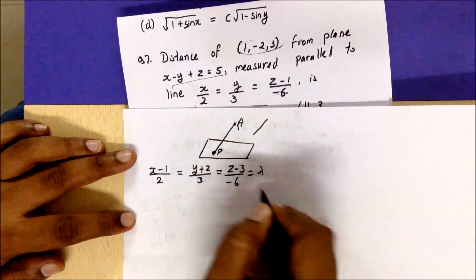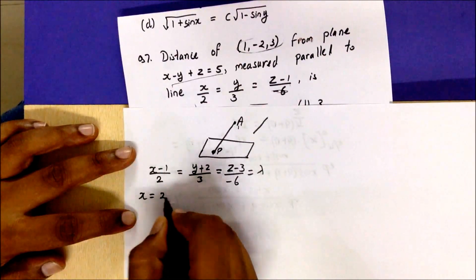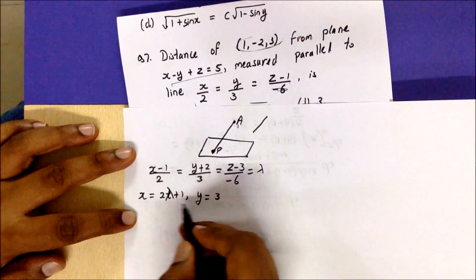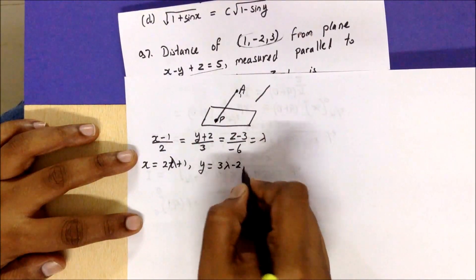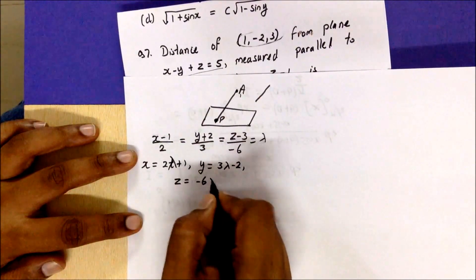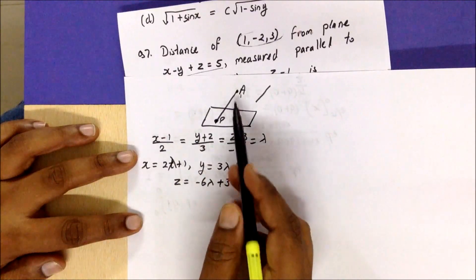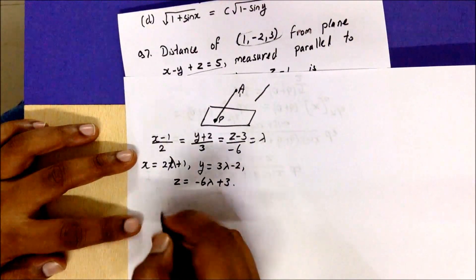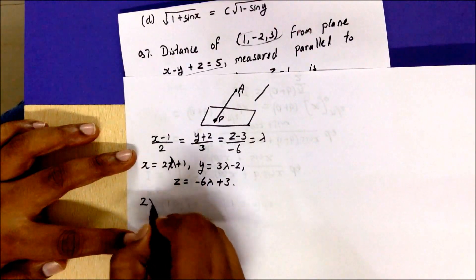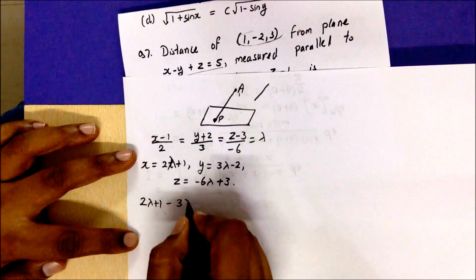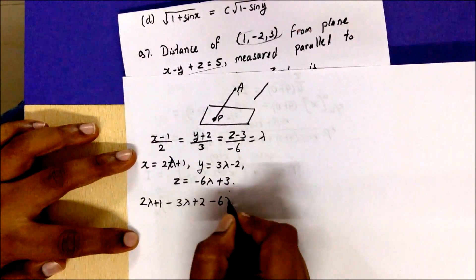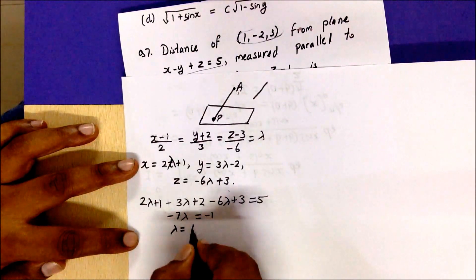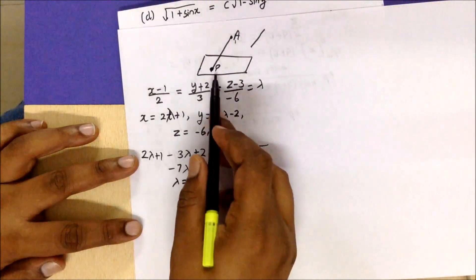From λ, the parametric coordinates are x = 2λ+1, y = 3λ−2, z = −6λ+3. Substituting into the equation of the plane and solving, we get λ = 1/7. So point P corresponds to coordinates (2/7+1, 3/7−2, −6/7+3).